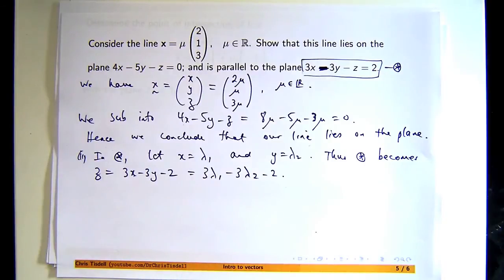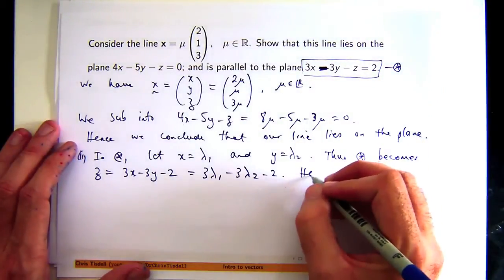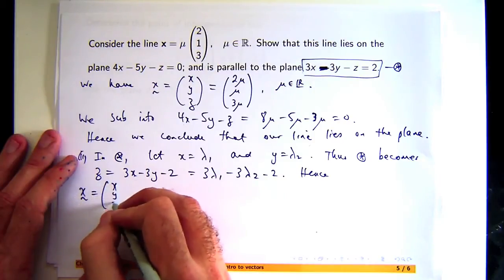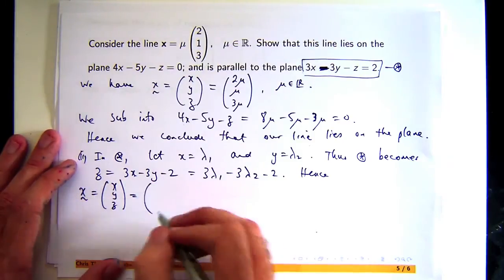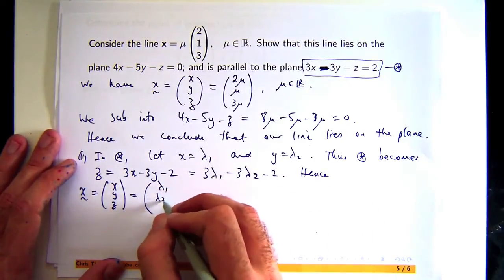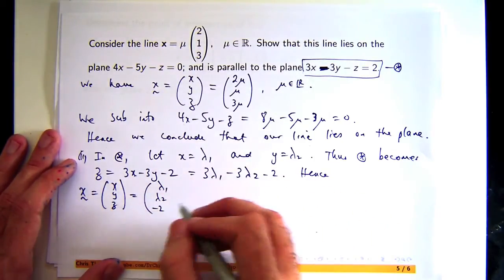So I can write this as a vector now. If I just write it out in this column form, put a lambda 1 there, lambda 2 there, and a big mess down here, which I'm going to write in the following way.